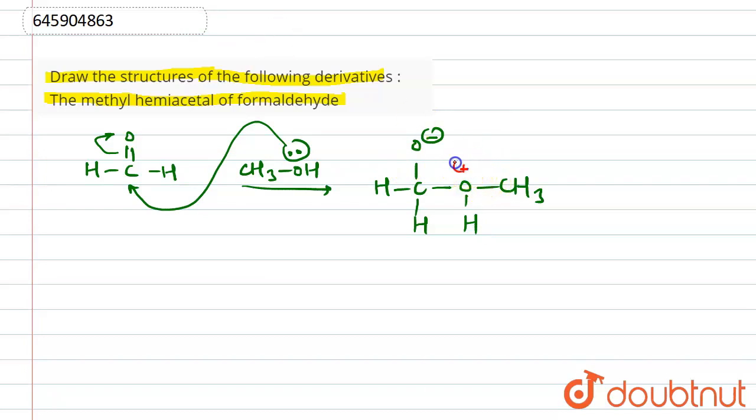Now from here, this bonded pair will be drawn by this oxygen to neutralize itself, and from here H+ will be released. That H+ will combine to this one to convert into OH. So this compound is basically called as hemiacetal.